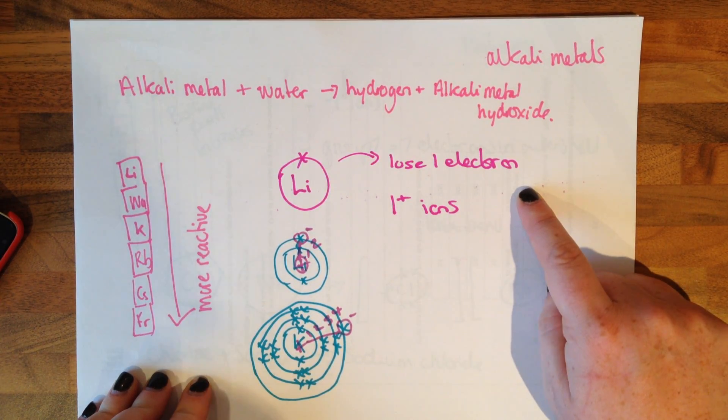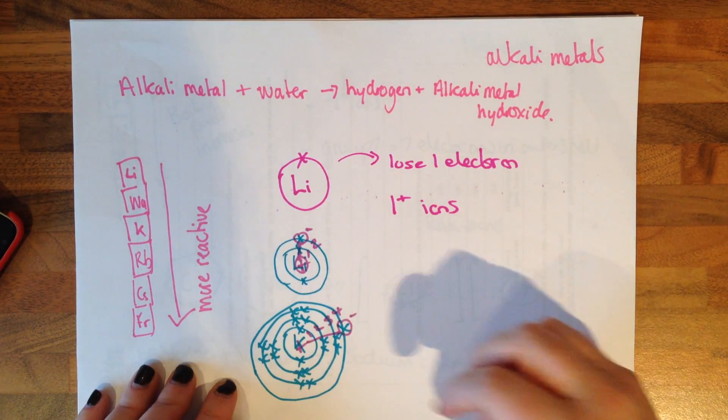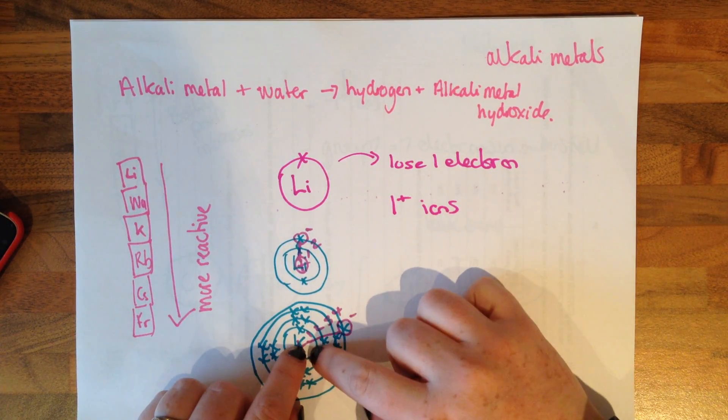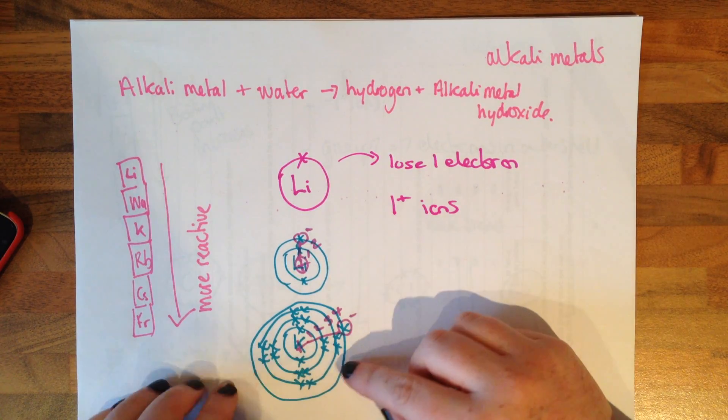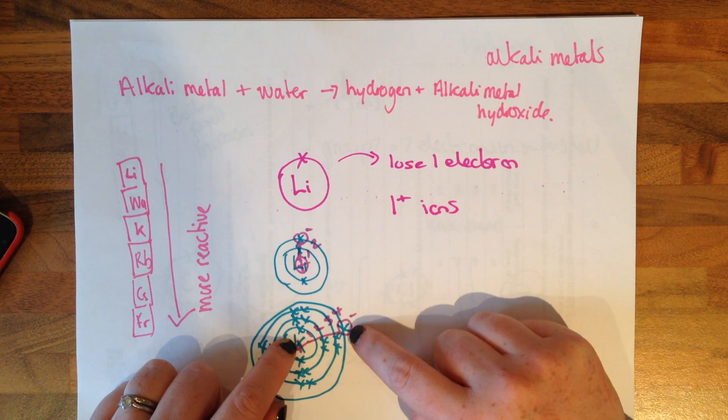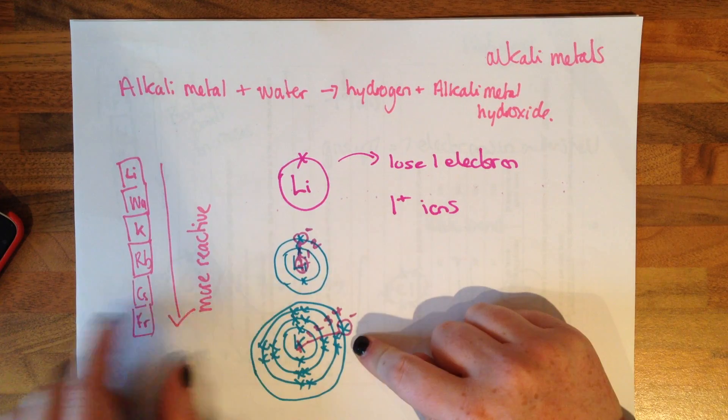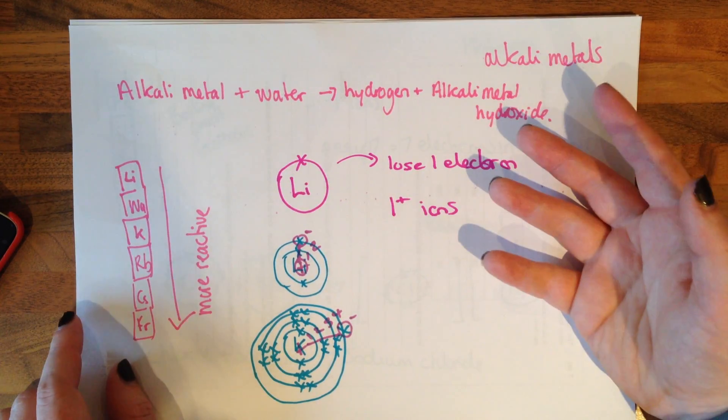When the alkali metals want to react, they want to lose an electron. So they're going to form plus one ions. And the reactivity all depends on the number of electron shells between the positive nucleus and this electron here. The further the electron is away, the more easily it's going to be lost. The more easily it's lost, the more reactive things are.